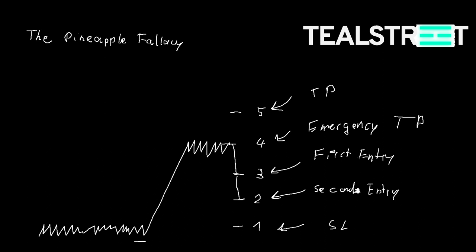This is our main TP and this is our 'emergency TP' — if something goes wrong. We do expect that the price from here comes up and hits at around five. So far so good — this is pretty easy to understand. We have a trend on the higher time frame, we want to jump in around here, and our stop is out here. I'll clean this up and see you in the next sheet.